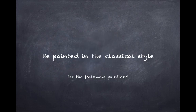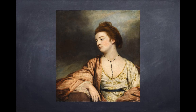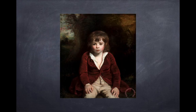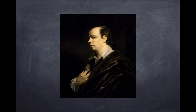Let us take a look at some of his paintings. Joshua Reynolds painted portraits — he was a portraitist — and he belonged to the Rococo style. The Rococo style came at the end of the Baroque, and the Baroque followed the Renaissance style: Renaissance, Baroque, Rococo. These are all classical styles. This is Joshua Reynolds' famous painting of Oliver Goldsmith, the playwright, novelist, and poet. He was also a member of Dr. Johnson's Circle.